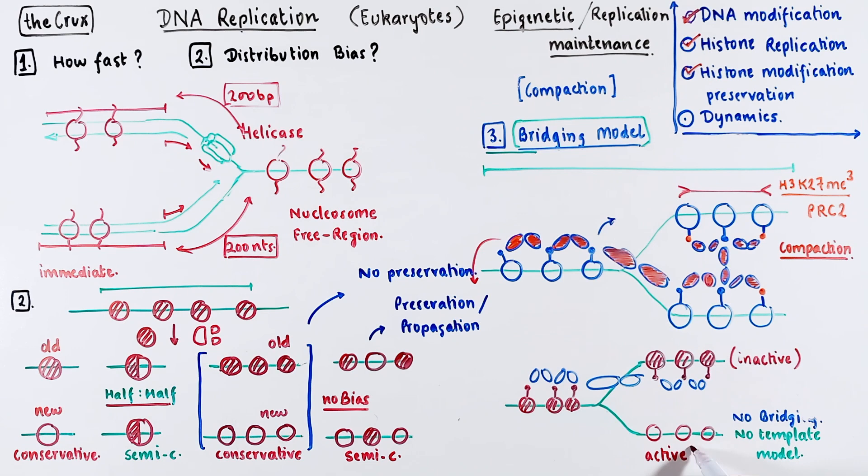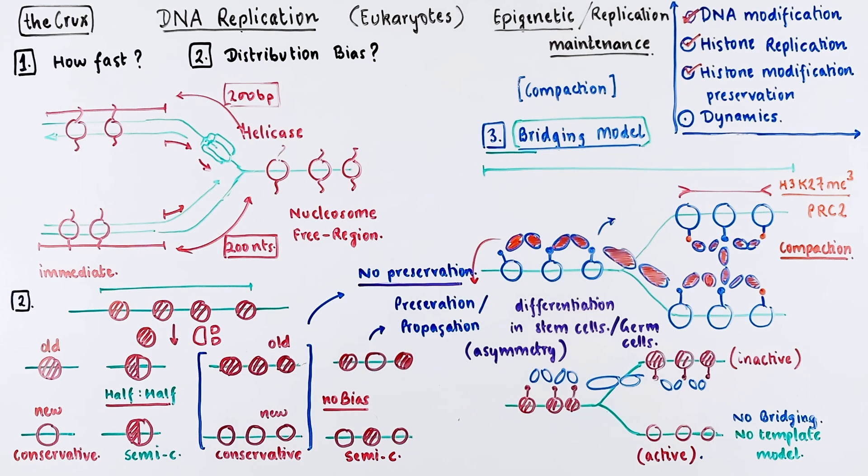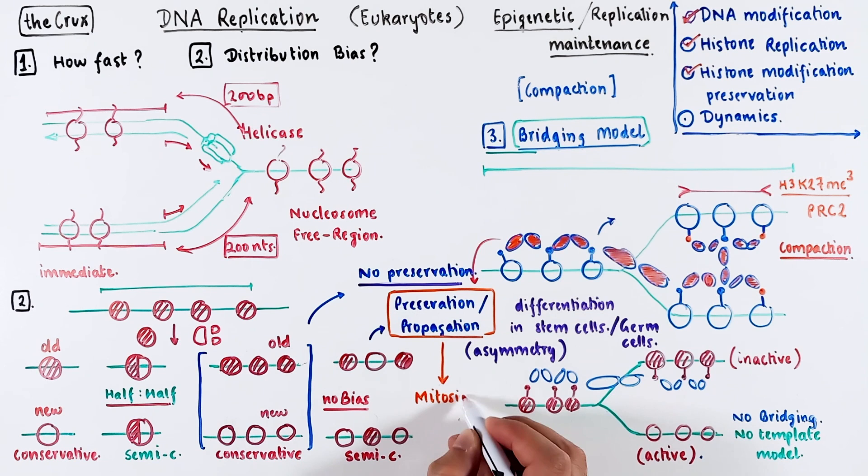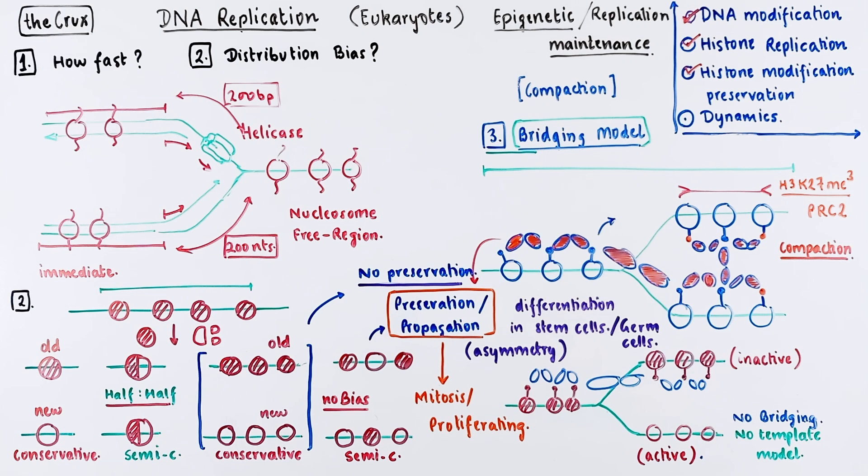This is useful when you have stem cell differentiation or germline cells maturing because the asymmetry provides a sort of diversity in epigenetic and gene expression profile of the daughter cells. So the lack of preservation is sometimes useful. The preservation of epigenetics is more common to mitotic cells which are solely responsible for growth and proliferation, as you might expect in somatic cells. This covers the short intro to dynamics.